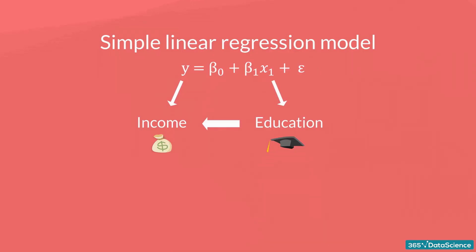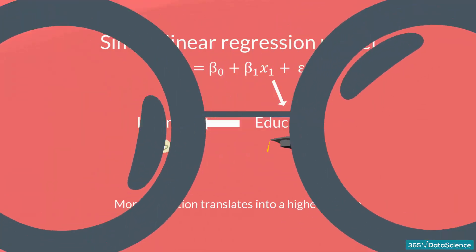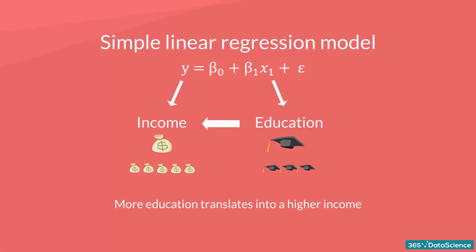There is a causal relationship between the two. The more education you get, the higher income you are likely to receive. This relationship is so trivial that it is probably the reason you are watching this course right now. You want to get a higher income, so you are increasing your education.